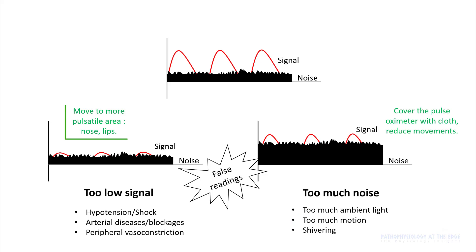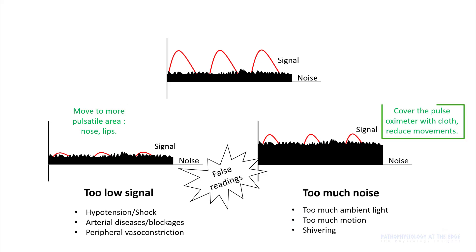To improve readings, move your pulse oximeter to more pulsatile areas — for example, the nose and lips — reduce movement, and remove ambient light.